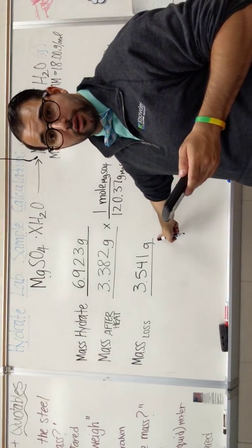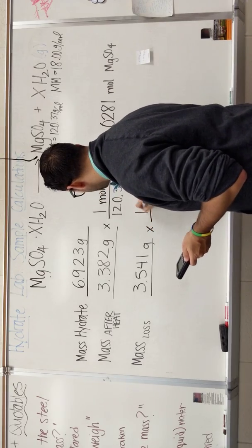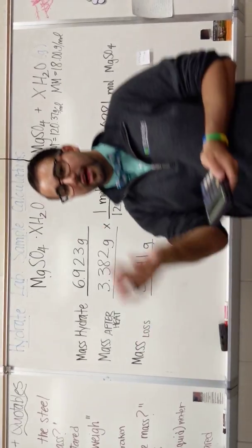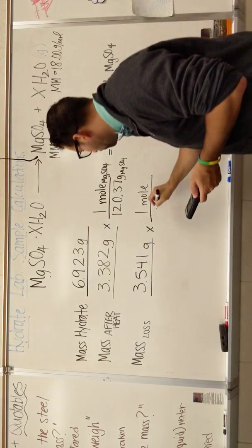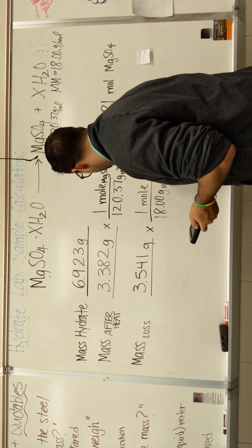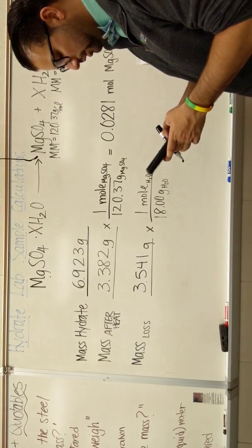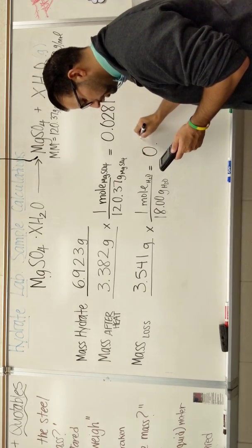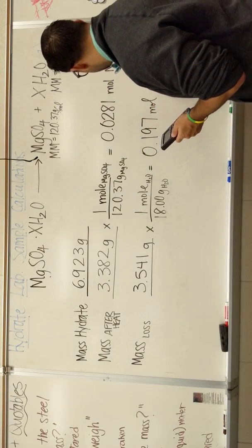And now I'm going to convert these grams to moles of water. I'm going to use the molar mass of water. Remember, this mass loss is due to water that left. It's this H2O that left the system. So 1 mole over 18 grams of H2O. And if I do this calculation, 3.541 divided by 18, I get 0.197 moles of H2O.